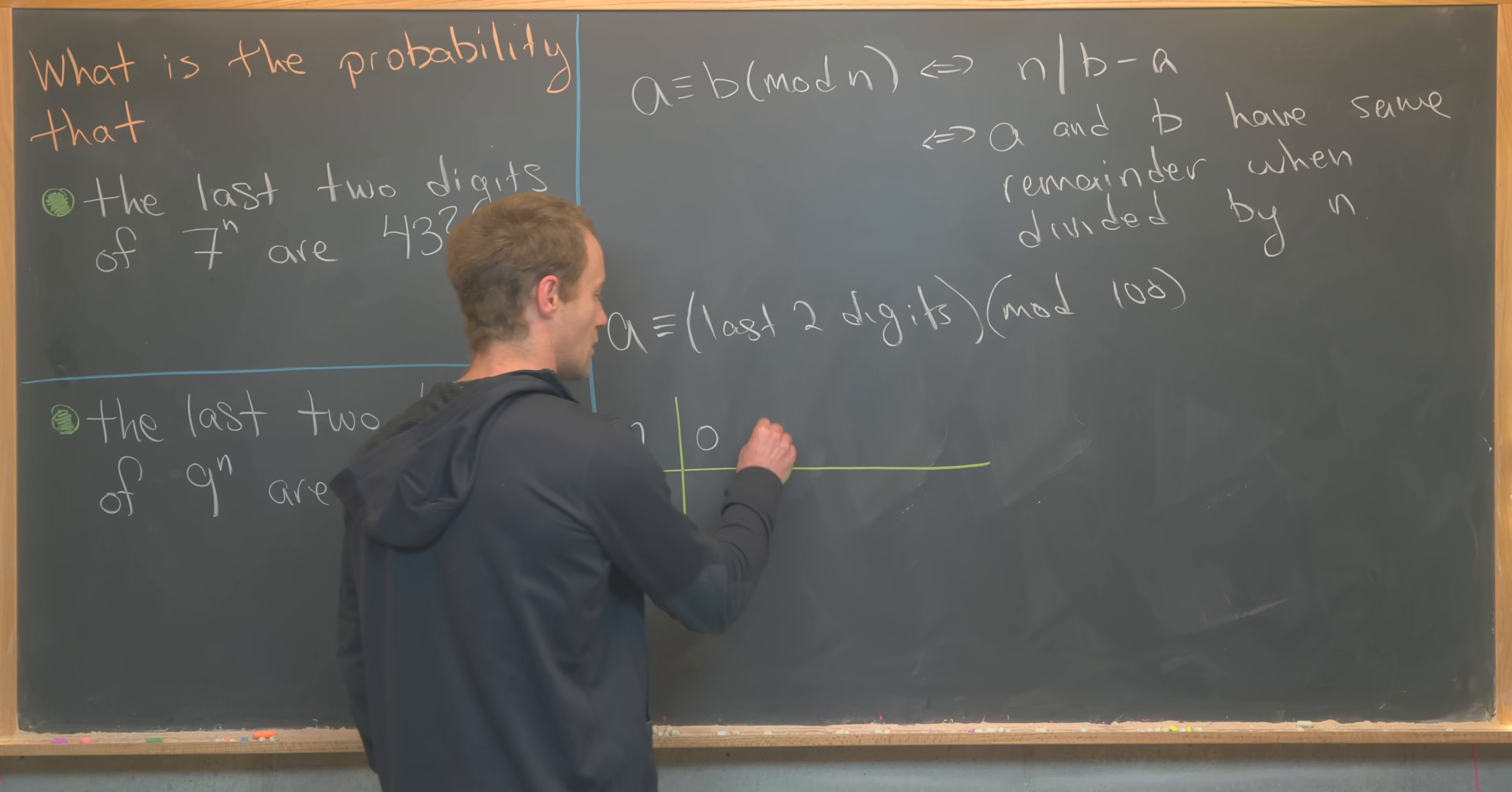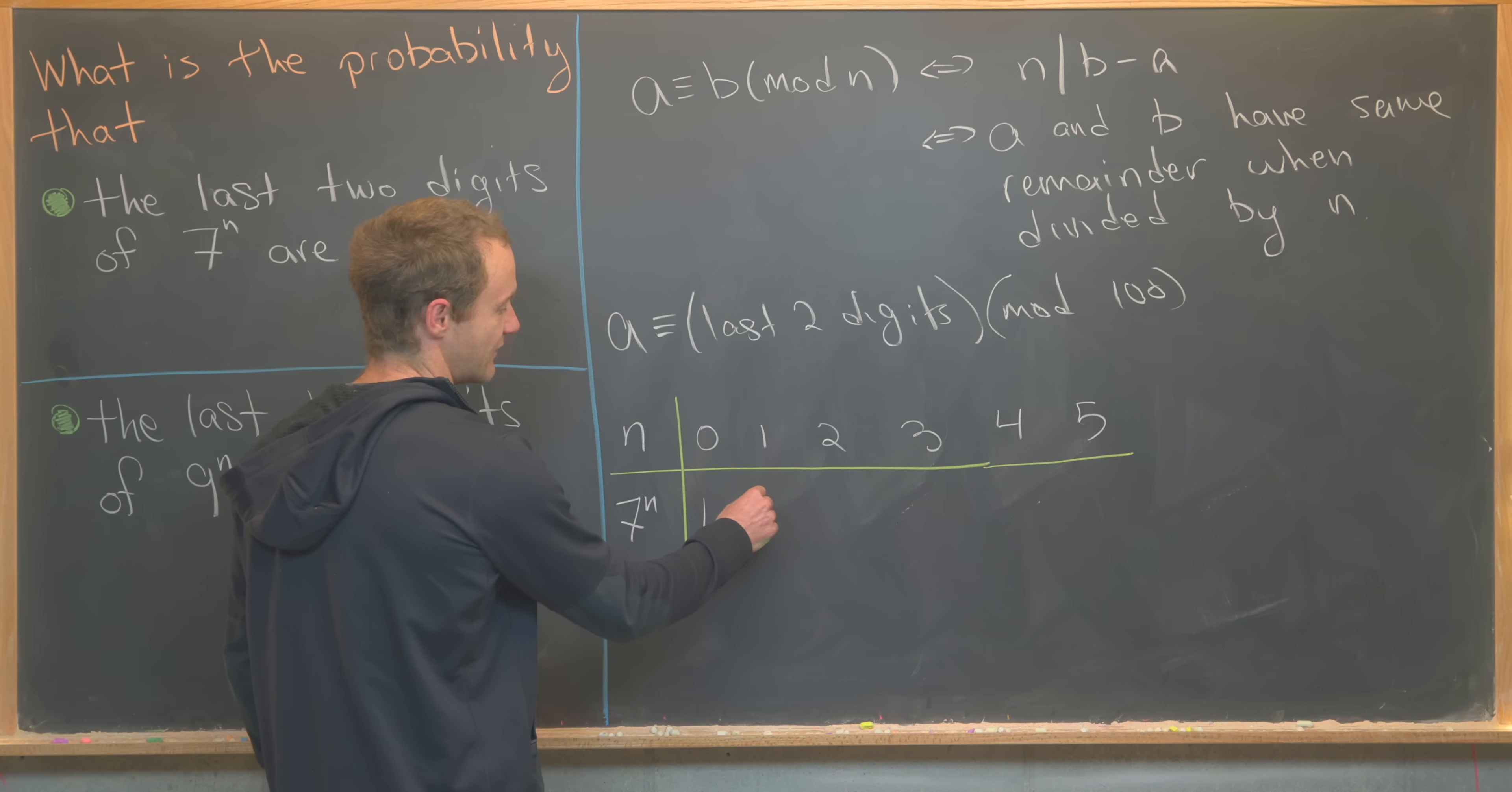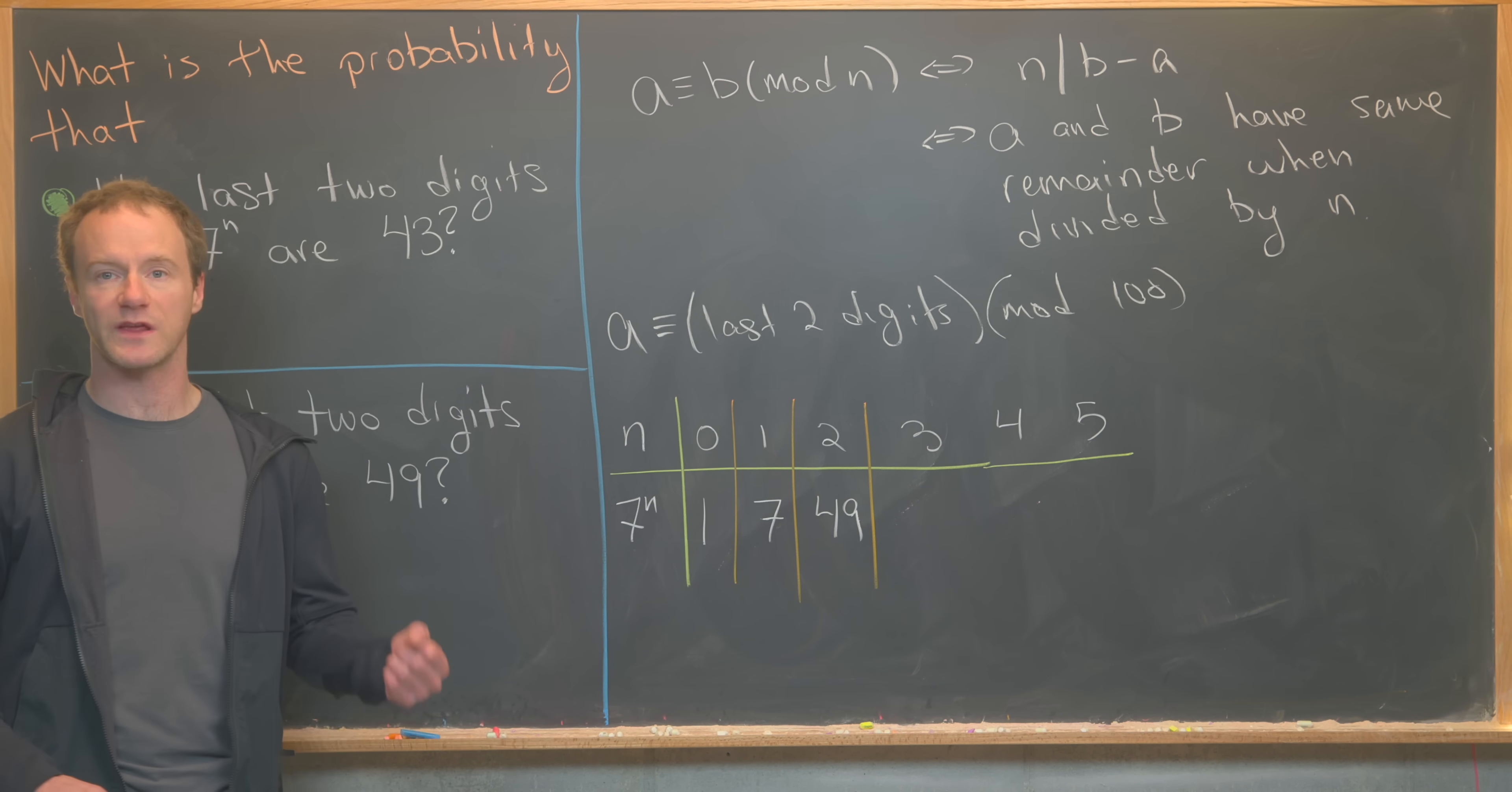So we've got 0, 1, 2, 3, 4, 5, and then hopefully we see some structure at that point. So 7 to the 0 is going to be 1. 7 to the 1, that's obviously 7. 7 squared is 49. Then next, 7 cubed is 343.